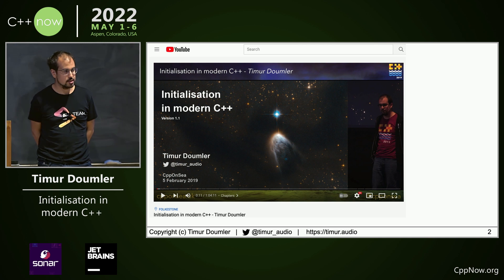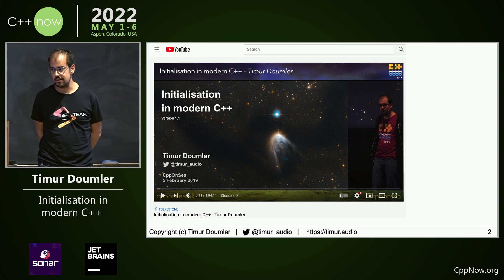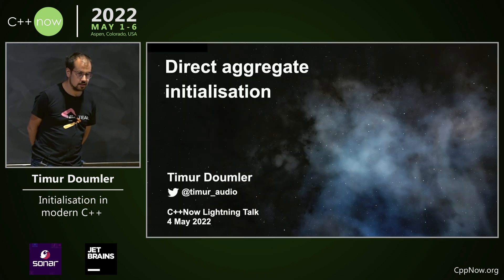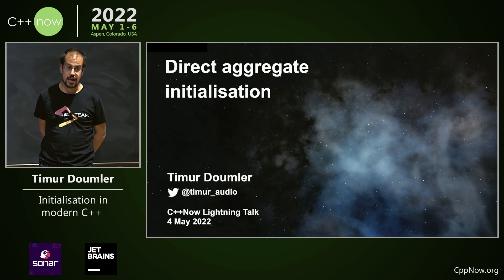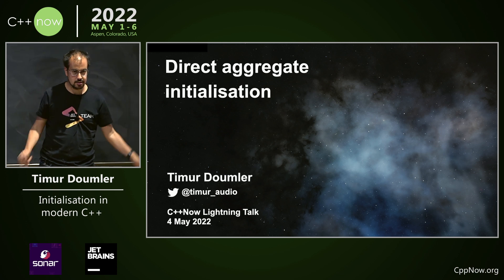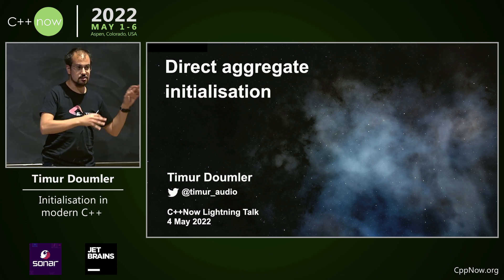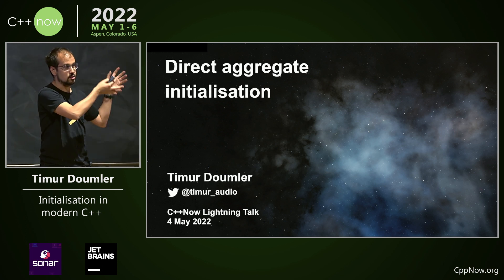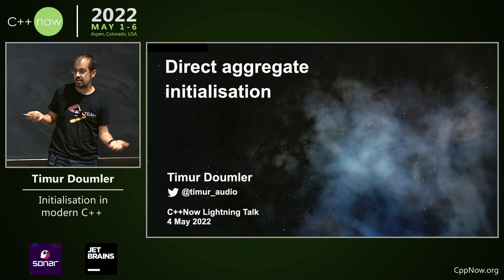That was before C++20. Now we have C++20, so we have even more ways to initialize a variable. One of them is this weird thing which actually doesn't have a name in the standard. It's this new way of doing aggregate initialization by using parens, and the standard calls that direct initialization. I'm going to call this direct aggregate initialization. It's not a term in the standard, but I think it makes sense, even if it's not really more direct than the traditional aggregate initialization.